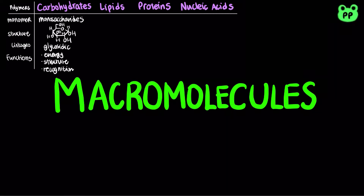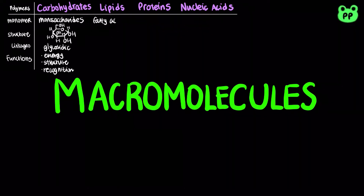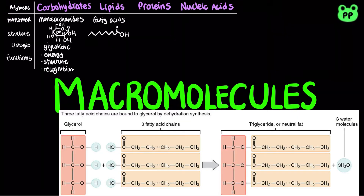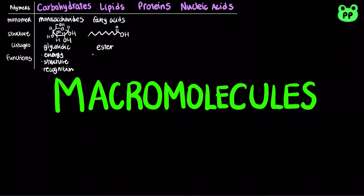Lipids are the one class of large biological molecules that do not form polymers. Their unifying feature is having little or no affinity for water. A fatty acid consists of a carboxyl group attached to a long carbon skeleton. Fats are constructed from glycerol and fatty acids connected by ester linkages.